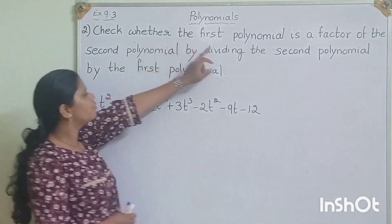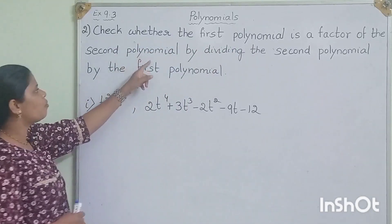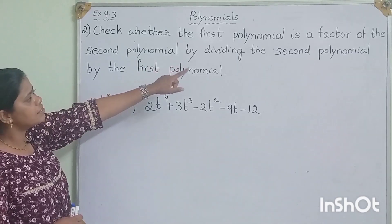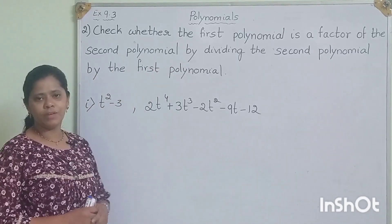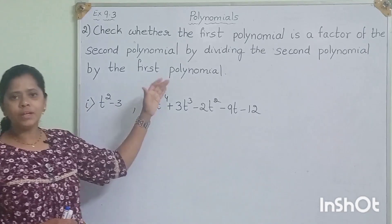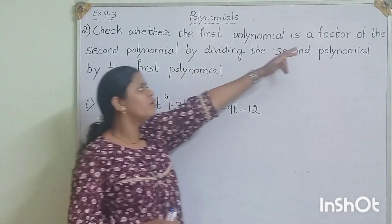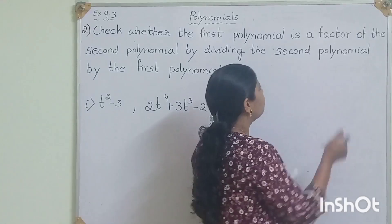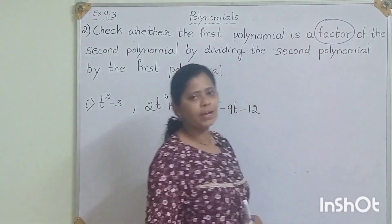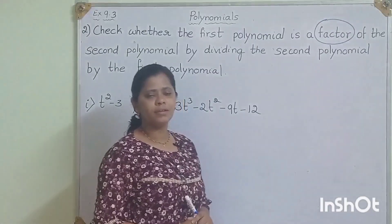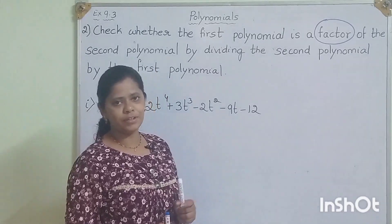Check whether the first polynomial is a factor of the second polynomial by dividing the second polynomial by the first polynomial. Before solving this, first let me come to the word 'factor.' What do you mean by factor? Let me explain this by using a simple example.